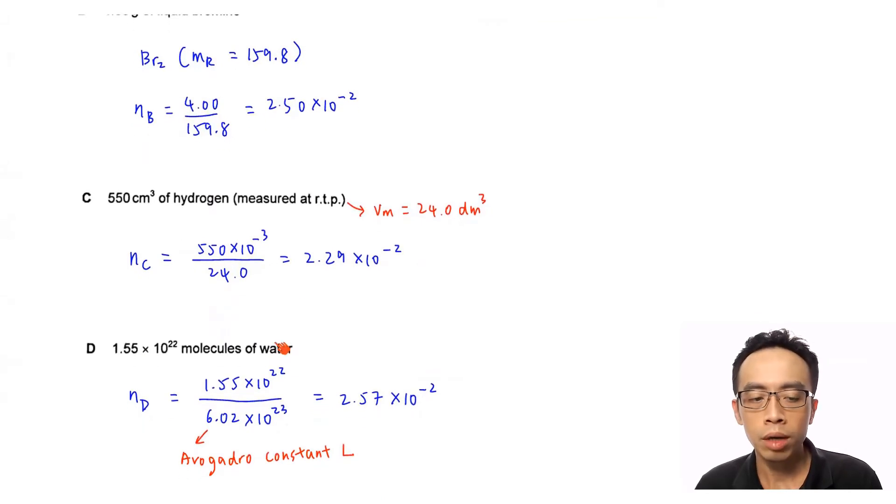Finally, involving option D, 1.55 × 10²² molecules of water. What we are doing is we are converting this to number of moles. For option A, B, C, it is easier for us to just determine the number of moles. Then, for option D, we also convert the number of molecules to number of moles. Because if we compare quantity based on number of moles, it is a lot more common and straightforward. Number of moles for option D will be 1.55 × 10²² over Avogadro constant, which is 6.02 × 10²³. So this will work out to be 2.57 × 10⁻².